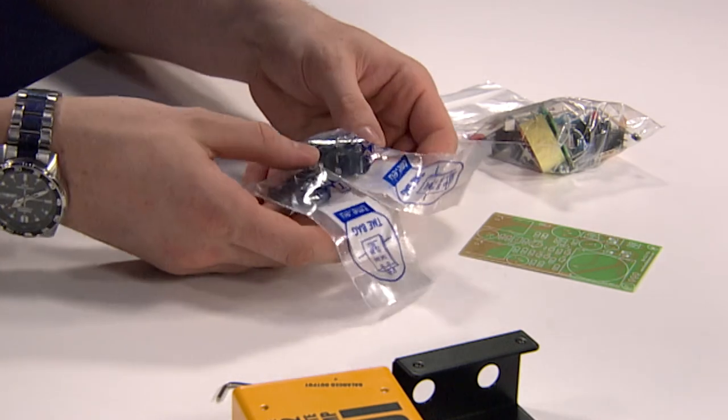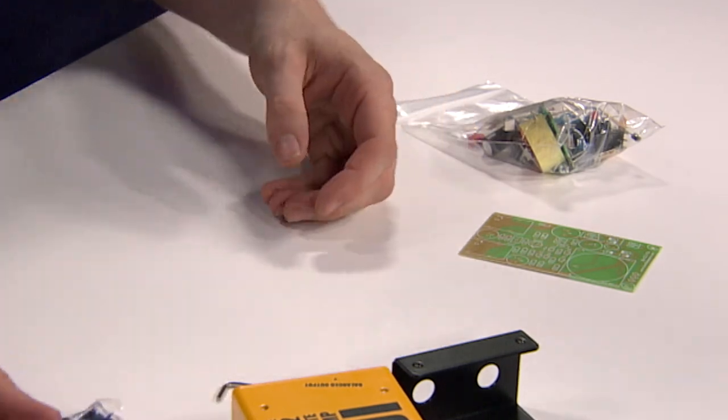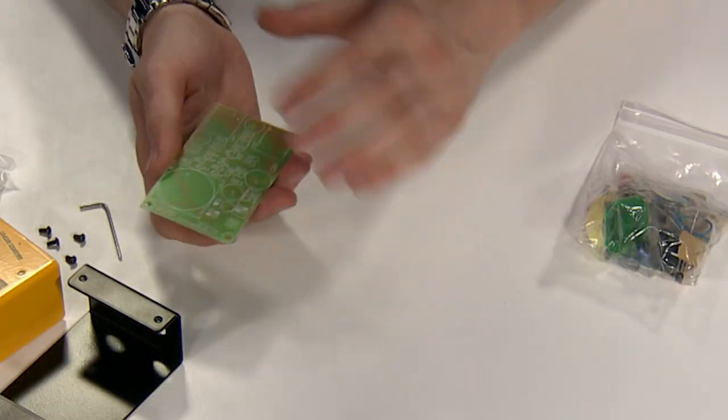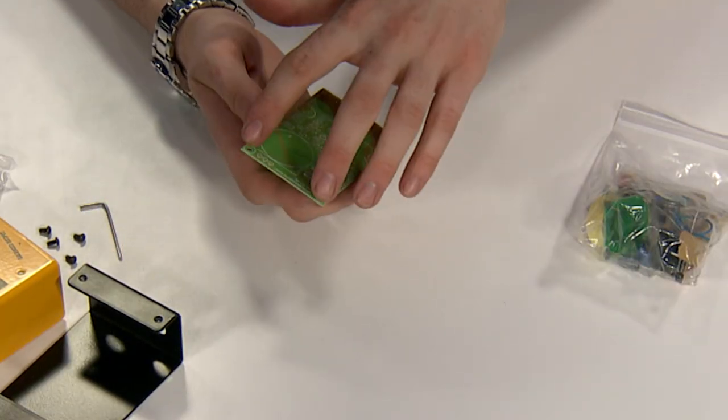You have the two quarter inch jacks for input and through. You have your PCB, which nicely mounts within the enclosure with these two screws here.